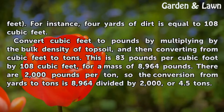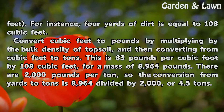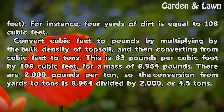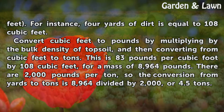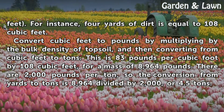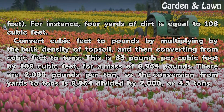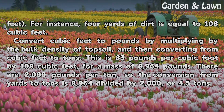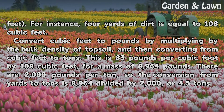This is 83 pounds per cubic foot multiplied by 108 cubic feet, for a mass of 8,964 pounds. There are 2,000 pounds per ton, so the conversion from yards to tons is 8,964 divided by 2,000, or 4.5 tons.